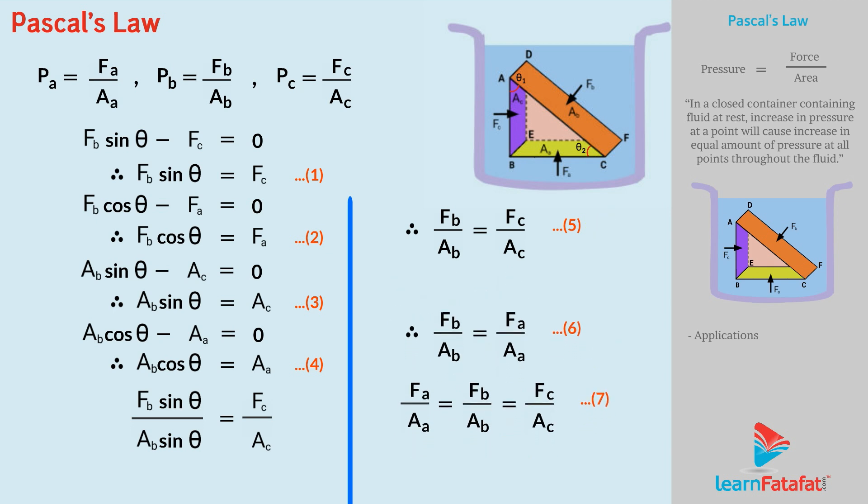But we know that pressure P equals to F upon A. So, for equation 7, can we write PB equals to PC equals to PA? Yes, of course. What do you understand by this relation? You will clearly say that pressure is same in all directions.